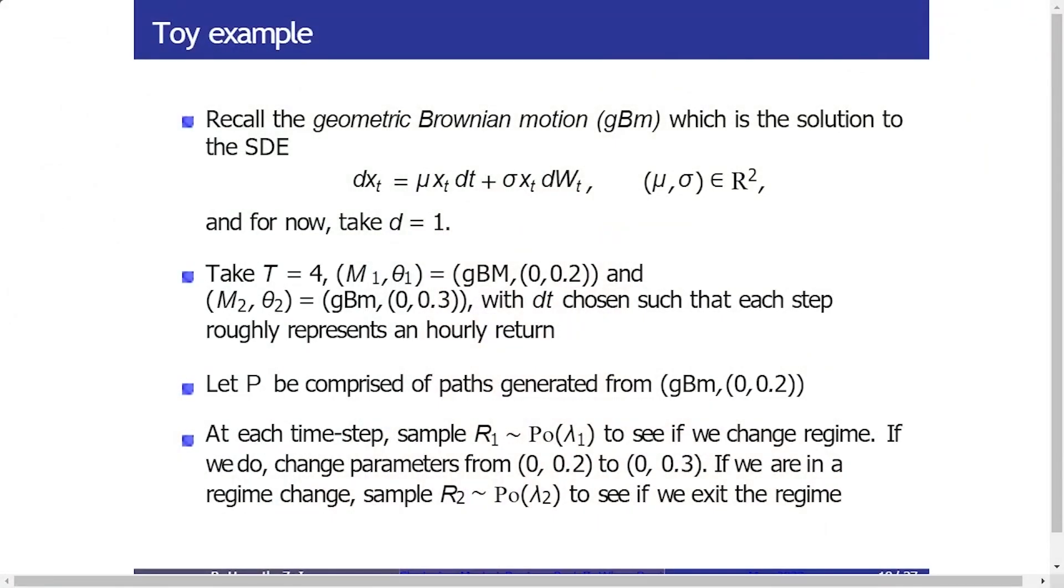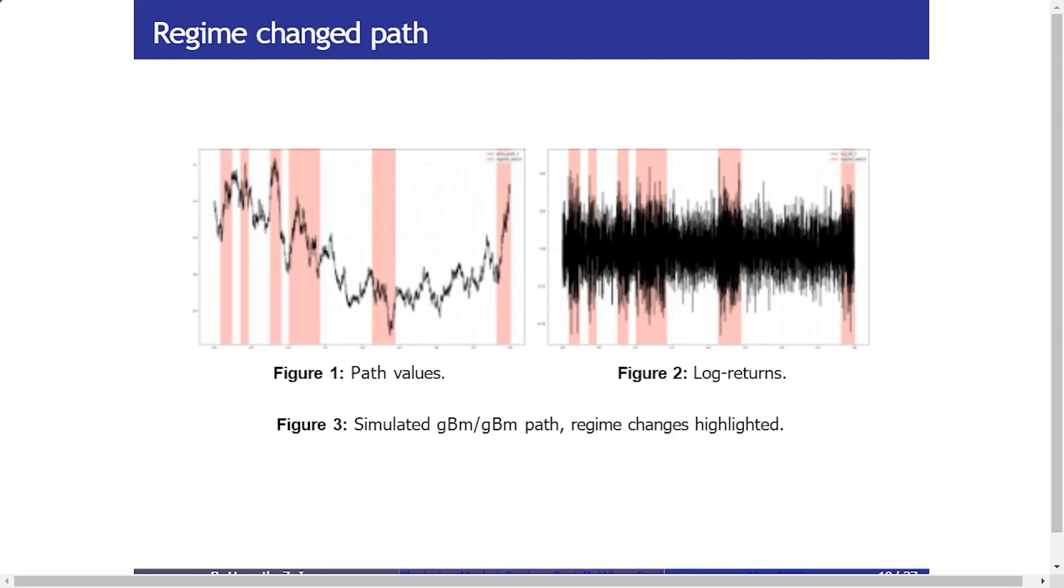We're going to get to an example with some experiments now so you can see this in action. The first experiment is a relatively simple one. We take a geometric Brownian motion, we simulate it for four years, and what we do is we switch regimes. So we have two regimes: the first one, the volatility parameter is given by 0.2 and the drift is given by zero. And in the second regime, the volatility parameter is increased to 0.3. In this toy example, we make our beliefs just the base case of this geometric Brownian motion with volatility parameter 0.2. And we essentially construct a path where at random times the regime will switch and it will persist for a random amount of time and then it will end.